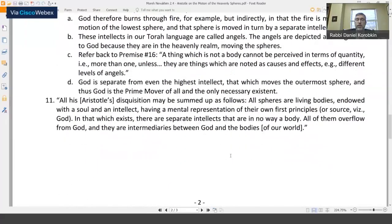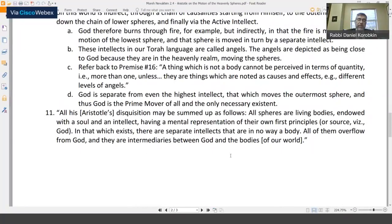And to just conclude this, we read from the Rambam's last lines of this chapter: 'All of Aristotle's disquisition on this principle of how the celestial spheres move may be summed up as follows: all spheres are living bodies endowed with a soul and an intellect having a mental representation of their own first principles, meaning ultimately of God, and that is what causes them to have this desire to move. In that which exists there are separate intellects that are in no way a body, all of them overflow from God, and they are intermediaries between God and the bodies of our world.' So that is the way that the Rambam sort of sums up this whole idea of the motion of the celestial spheres.